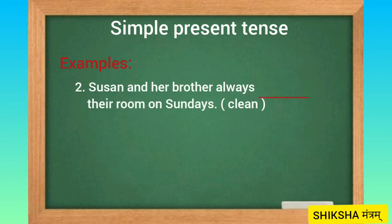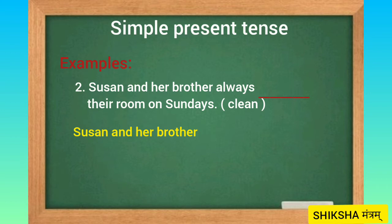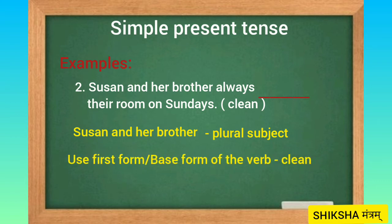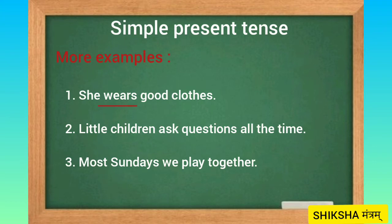Let us take a second example: Susan and her brother always dash their room on Sundays. The verb given here is 'clean'. Susan and her brother are two people, so the subject is plural. We will use the first form of the verb clean, and the sentence will be: Susan and her brother always clean their room on Sundays. More examples: She wears good clothes. Little children ask questions all the time. Most Sundays we play together.